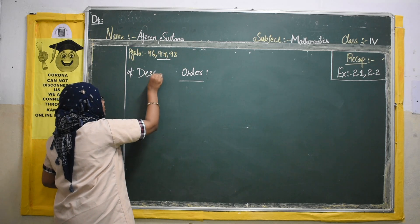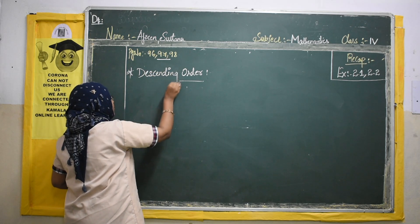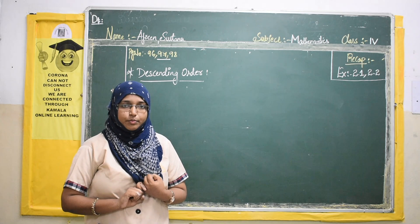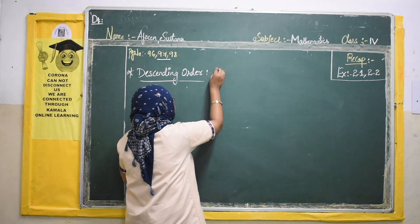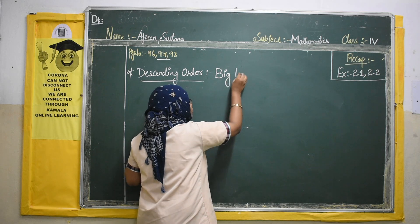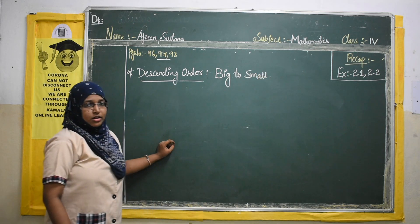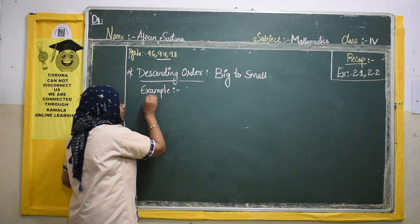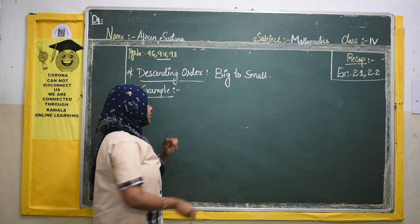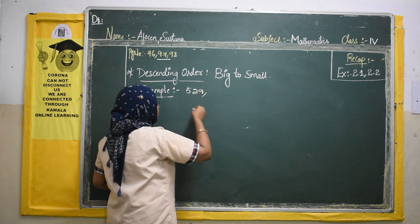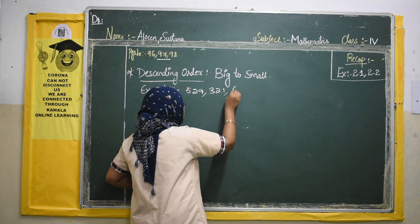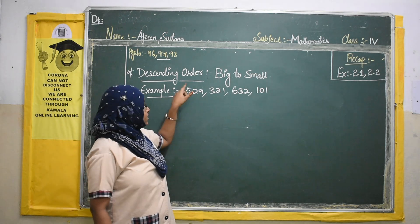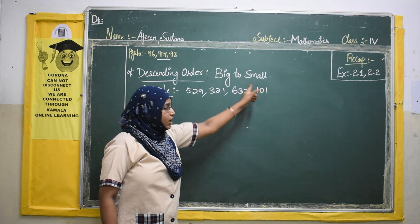Now let us see what descending order is. We have done ascending order, which means small to big. Descending order means big to small. Let us take an example using similar numbers: 529, 321, 632, and 101.